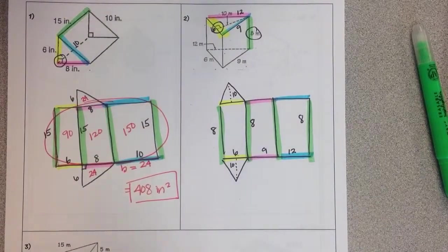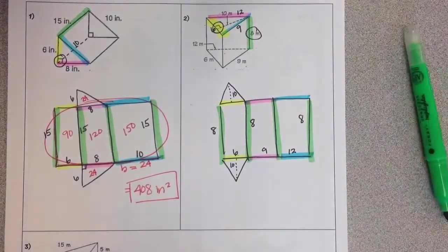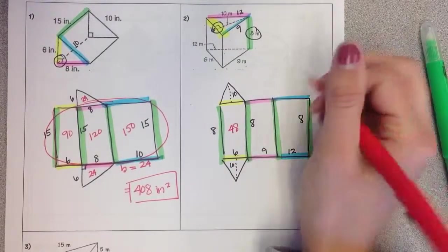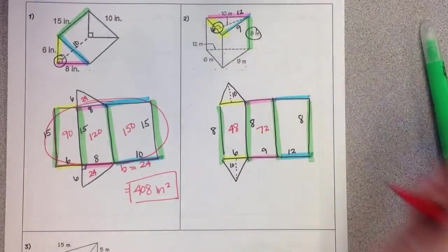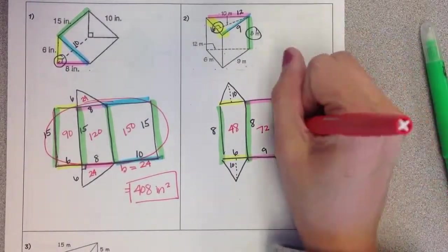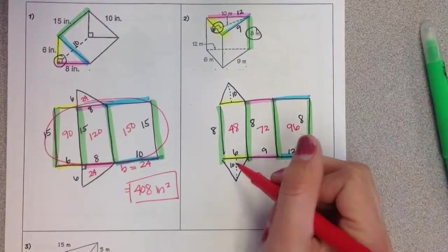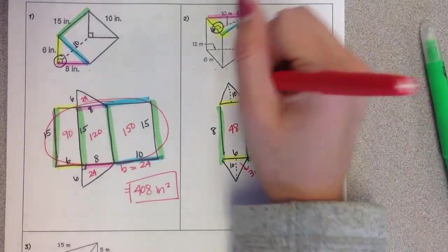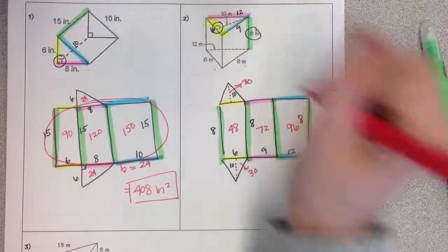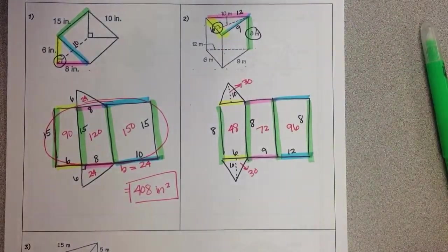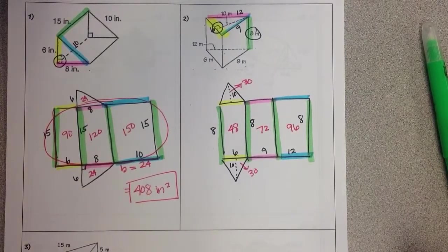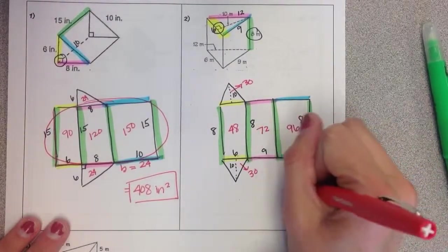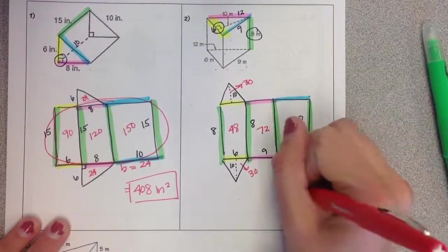So now that we've got all that, we can find the area of each part. Here, 6 by 8 is 48. 8 by 9 is 72. 12 by 8 is 96. For this triangle, base times height divided by 2 is 30 for both of these. So if we add those all up, we get a total surface area of 276 meters squared.